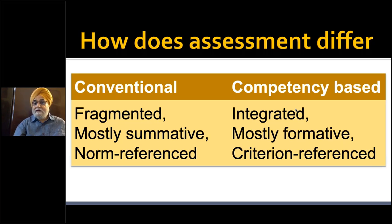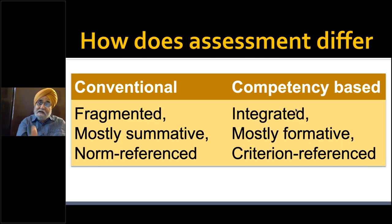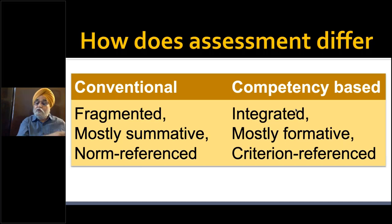The majority of assessment in competency-based education is formative, because there is no point telling a student at the end of one year that they have not learned a competency. Throughout the year you need to assess the student for that competency, and if they haven't acquired it, provide feedback and additional inputs. Thirdly, it is criterion-referenced — you don't compare the performance of one student with another; you compare the student's performance with pre-set criteria, such as the list of competencies given in the CBME curriculum.